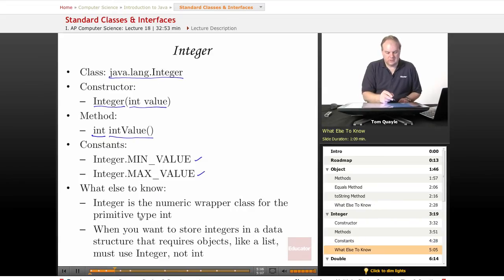What else you need to know about the Integer class? Integer is the numeric wrapper class for the primitive type int. You're expected to understand what the term numeric wrapper class means. It means that it provides an object that functions like the primitive type int, but it has the behavior and characteristics of an object. So it can be used when you want to store integers in a data structure that requires objects like a list. That's typically when you're going to use the object Integer from the class Integer and not simply the primitive type int.